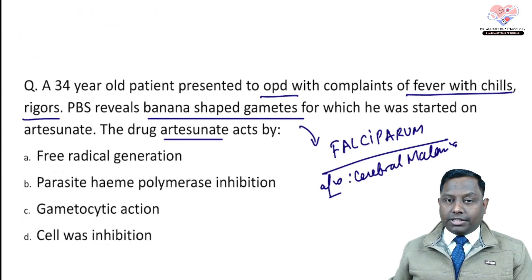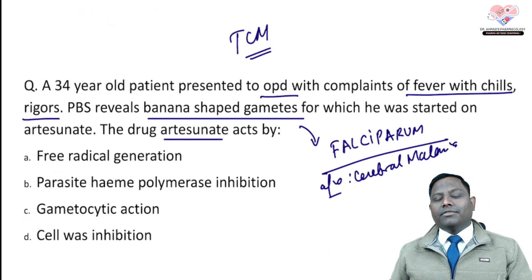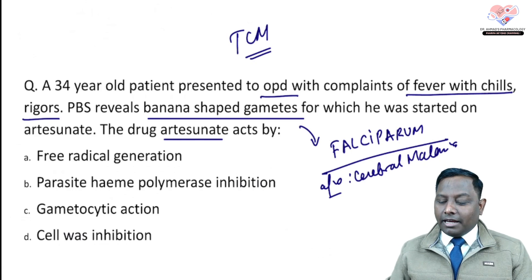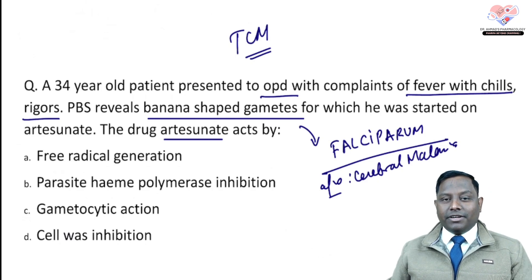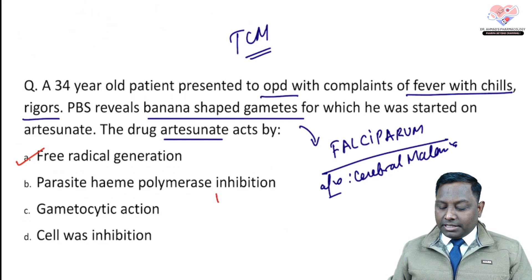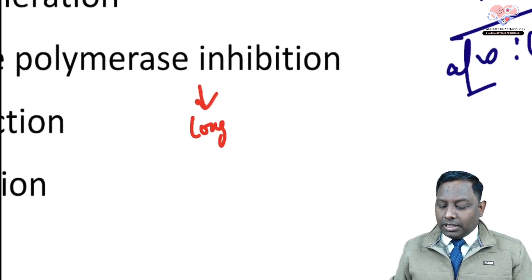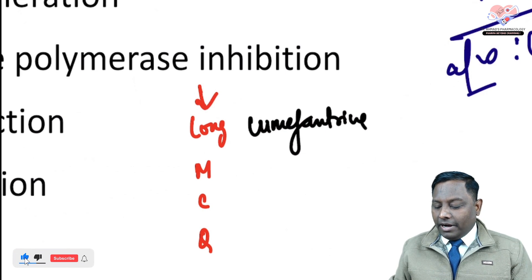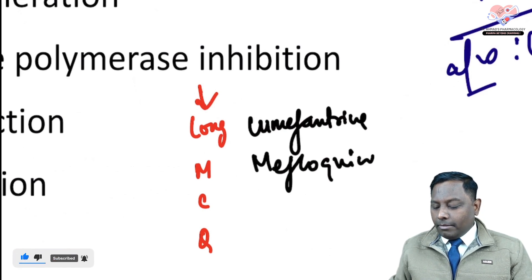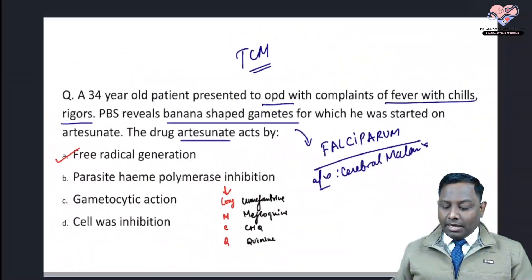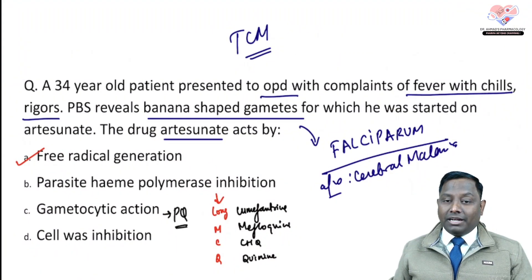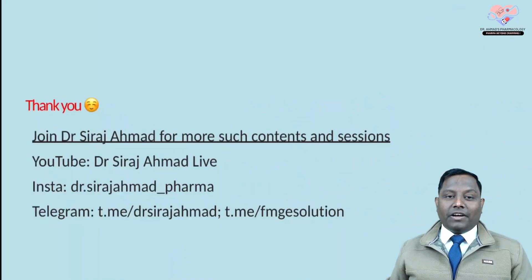Artesunate is derived from traditional Chinese medicine and its mechanism of action is free radical generation. Heme polymerase inhibitors — 'long MCQ dekhte ho khoon jala jata hai' mnemonic — include Lumefantrine, Mefloquine, Chloroquine, and Quinine. Gametocidal drugs are Primaquine and Tafenoquine — these are the anti-gametocytic drugs.